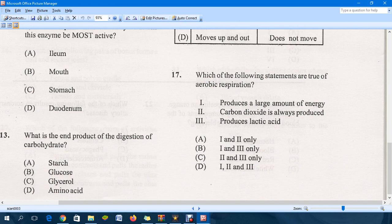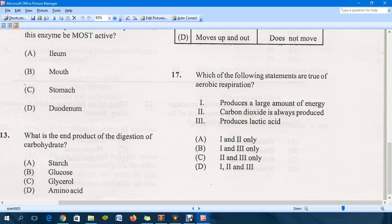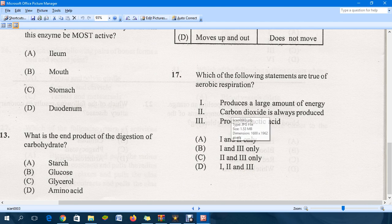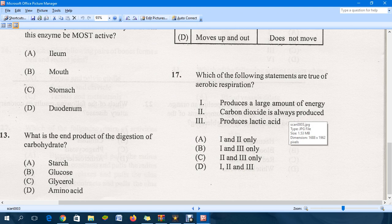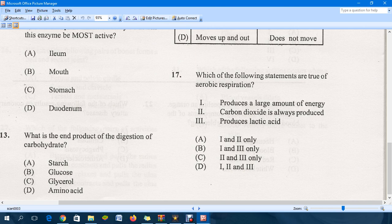Going down to question 17. Which of the following statements are true of aerobic respiration? First option: produces a large amount of energy. That is correct. Carbon dioxide is always produced. That is also correct. Produces lactic acid? No. A is the correct answer. Anaerobic respiration is what will produce a lot of lactic acid, so definitely A is the answer.